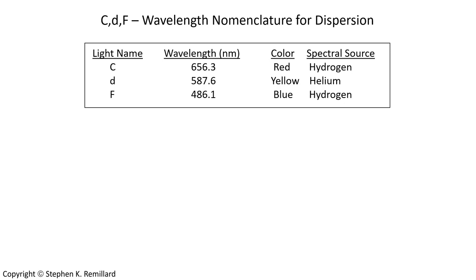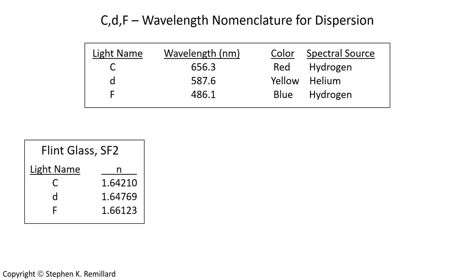There are two key varieties of glass in optics: flint glass and crown glass. Flint glass is more dispersive; crown glass is less dispersive. We're going to do an example with flint glass SF2, which is in the Schott catalog. It has an index of refraction of about 1.64, with slightly different values at C, D, and F light.